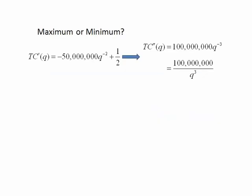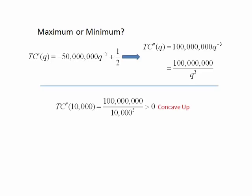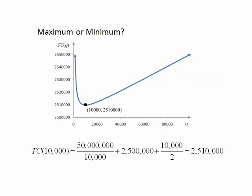We use the second derivative to decide if the critical number is a relative maximum or minimum. The second derivative is positive at the critical number, so it is a relative minimum. At this relative minimum, the total cost is $2,510,000.